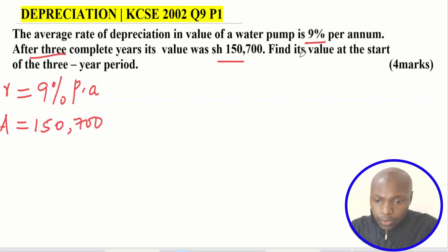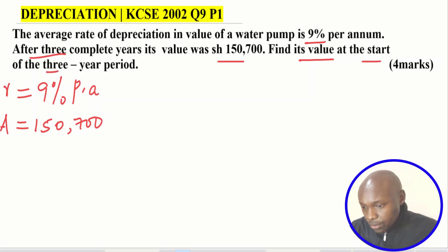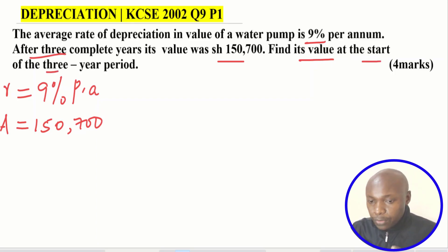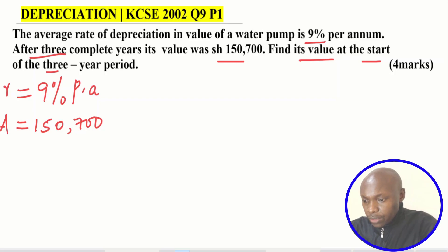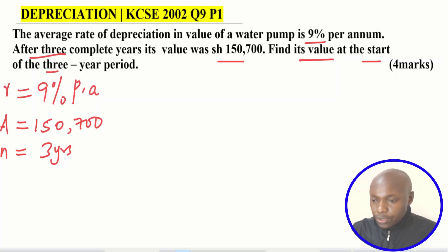We are supposed to find its value at the start of the three-year period — that is the value before depreciation, which is what we need to calculate. We're also given the period of depreciation, which is three years. To solve this question we're going to use the depreciation formula.